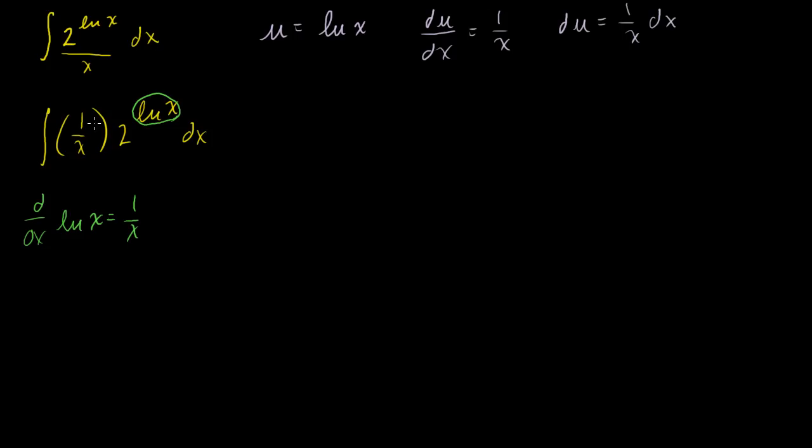So let's make our substitution. This is our integral. So this will be equal to the indefinite integral of 2 to the u times 1 over x dx. Now what is 1 over x dx? That's just du. So this term times that term is just our du. 1 over x times dx is just equal to du.